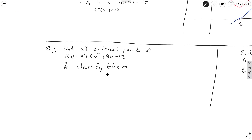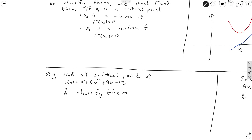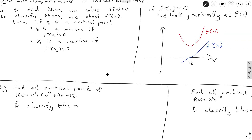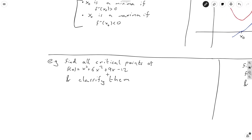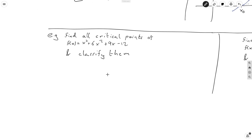So I've got some examples down here. For example, we've got this cubic function: f of x is equal to x cubed plus 6x squared plus 9x minus 12. We want to find all critical points and classify them. I should also point out this graphical method technically works even when the second derivative isn't zero; however, we generally stick to the second derivative test because it's easier to make rigorous arguments.